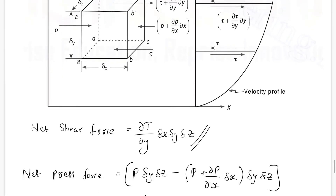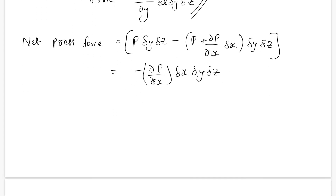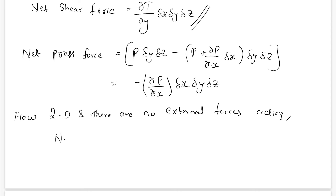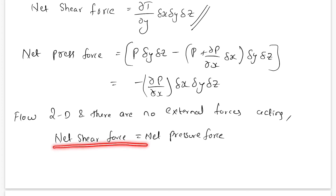If the flow is two-dimensional (2D) and there are no external forces acting, then according to the principle of equilibrium, the net shear force should equal the net pressure force. This is because as viscosity increases — that is, as shear stress increases — pressure is the only force that compensates. As shear stress increases, something has to push the liquid. That something is the pressure force, which decreases itself, losing energy to push the liquid forward. So net shear force equals net pressure force.